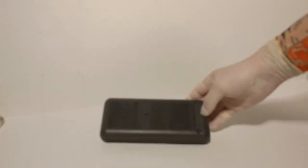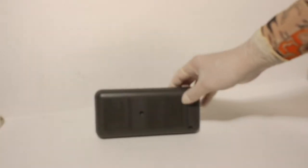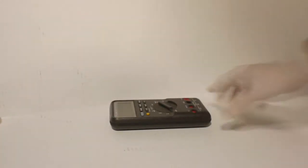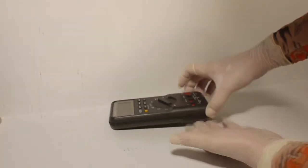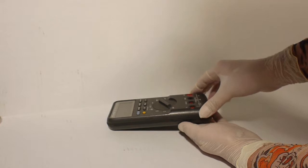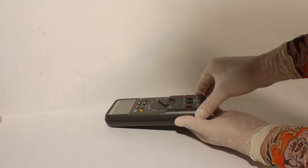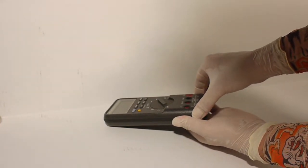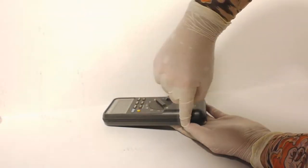Step number one. Remove the three Phillips screws on the back. Step number two. Lift up from the bottom of the top case. Be sure that the dust seal stays on the bottom case.